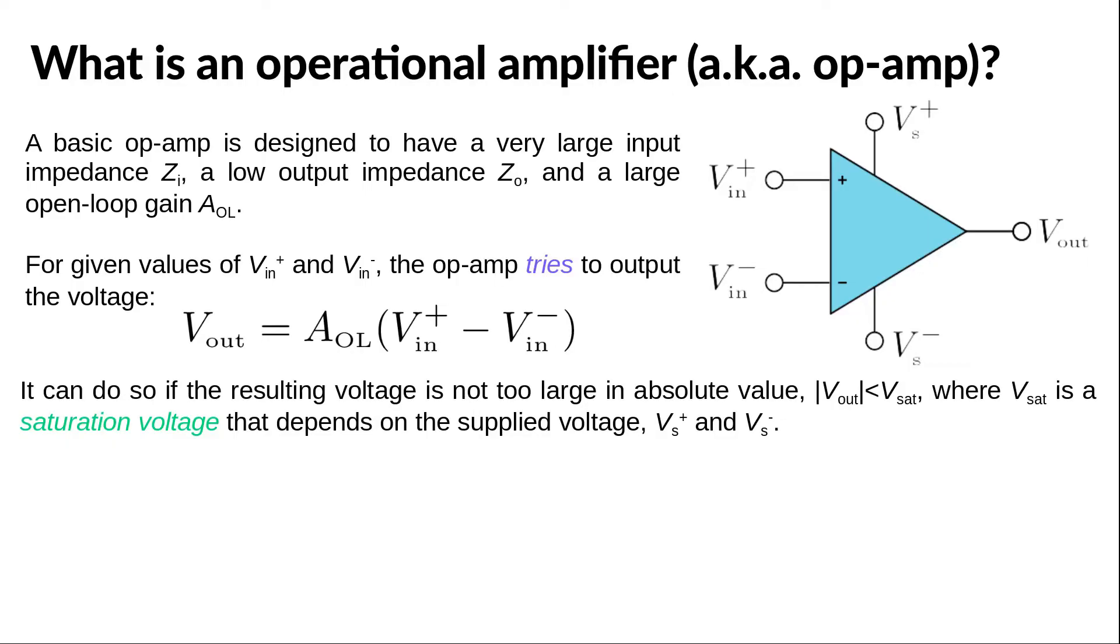The op-amp cannot output a voltage that is greater in absolute value than some saturation voltage. This saturation voltage depends on the supplied voltage.